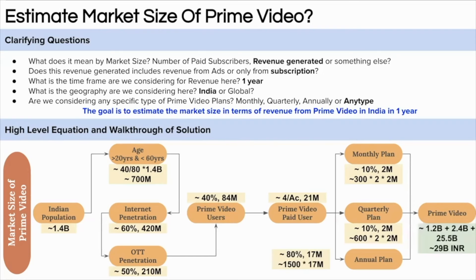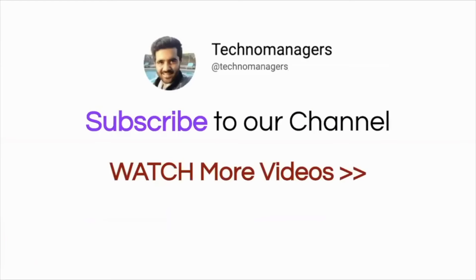Adding all of them gives approximately 29 billion rupees — that is the average annual subscription revenue of Amazon Prime in India. If you want to convert to dollars, you can do so accordingly. I hope you have learned something new. Please download the guesstimate ebook from the description box link. Till then, keep learning and keep watching.